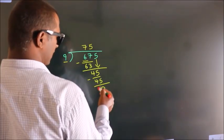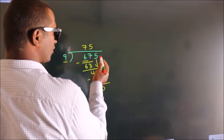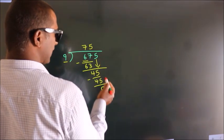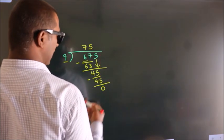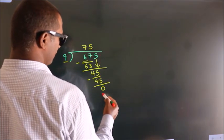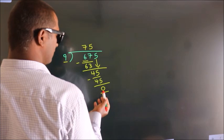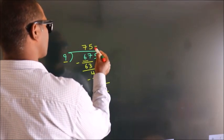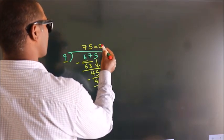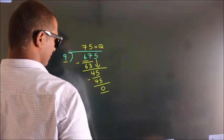After this, there are no more numbers to bring down. We got remainder 0, so 75 is our quotient. All right, thank you.